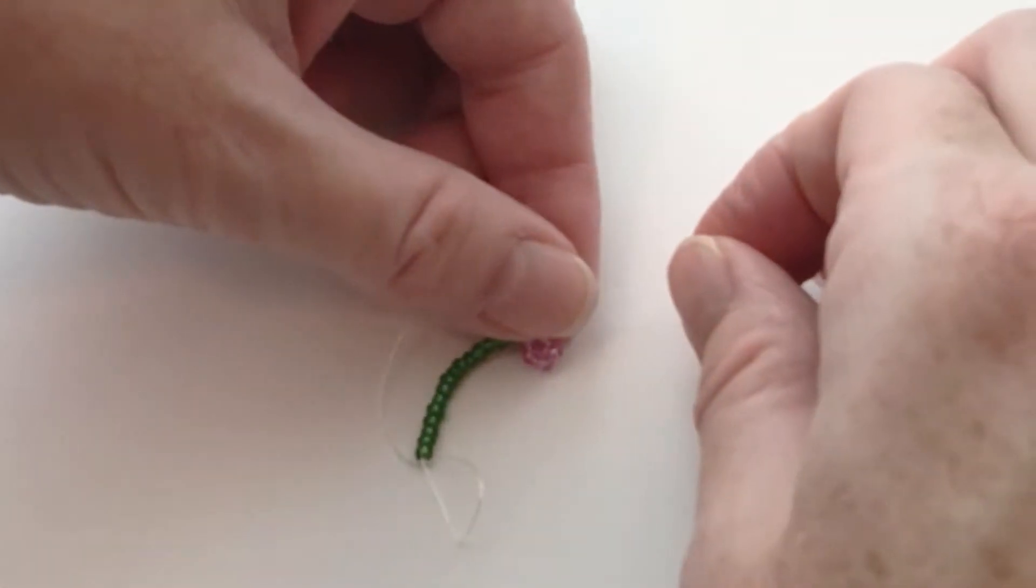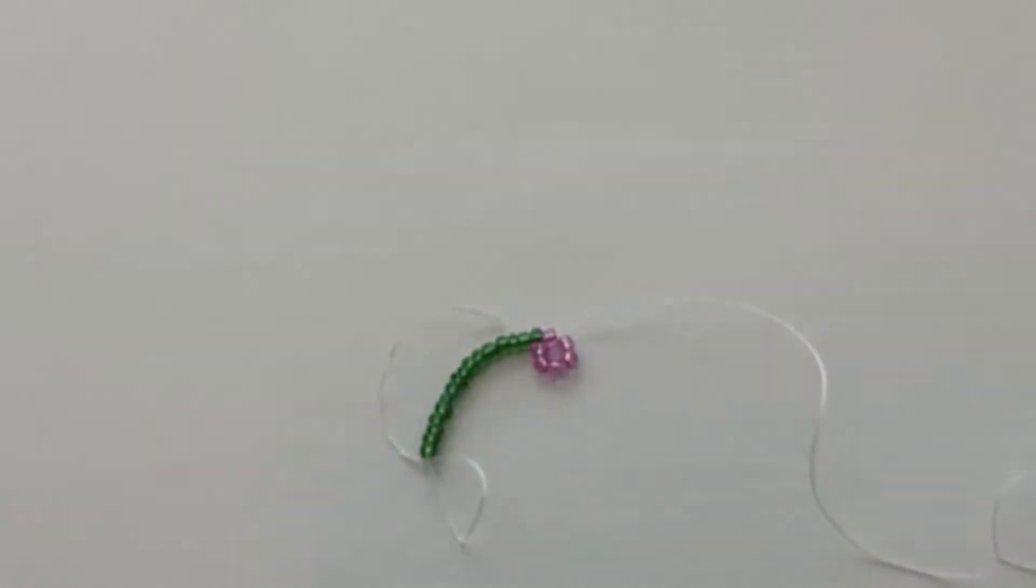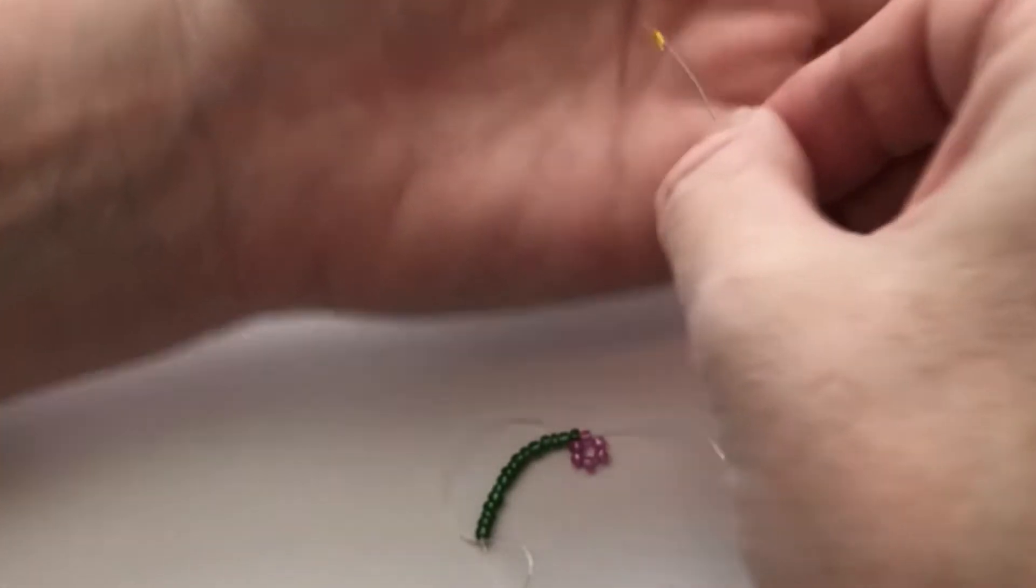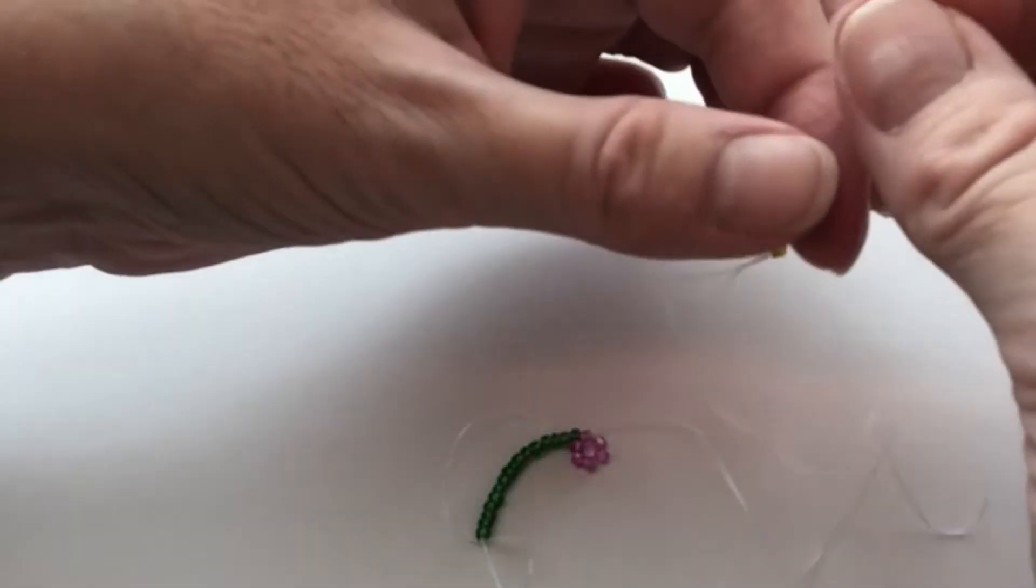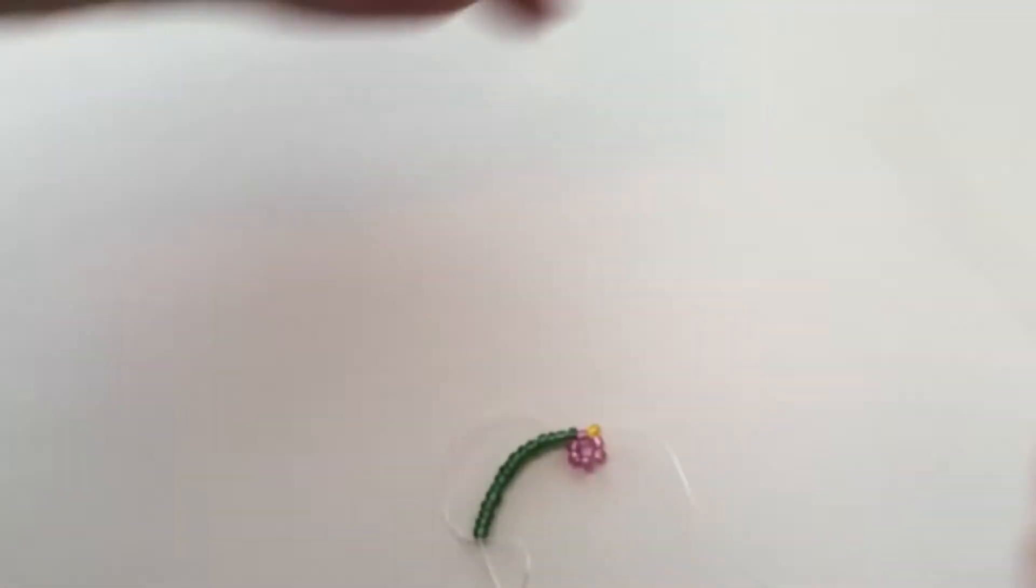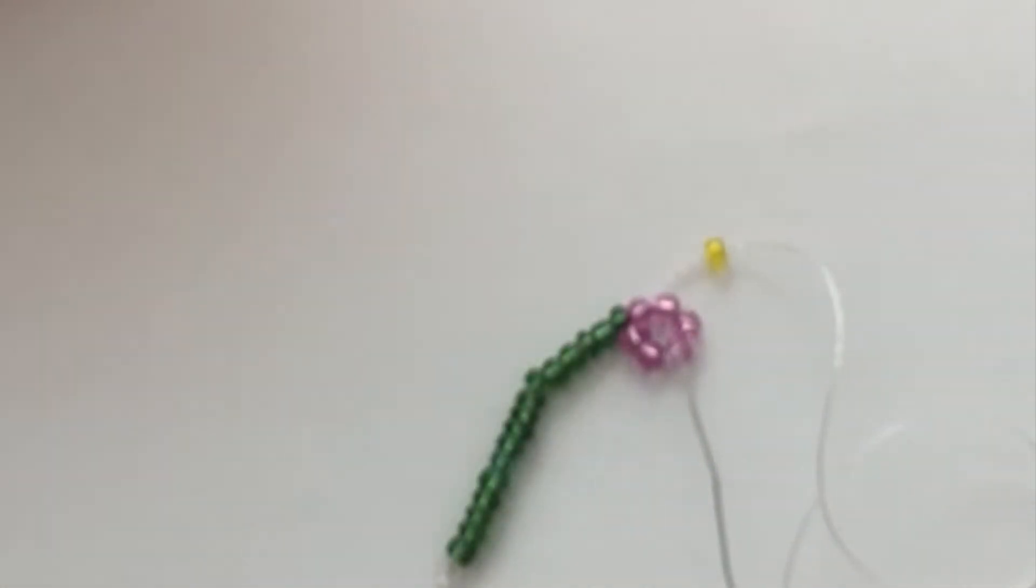Pull that snug against the band. To make the center of the flower, thread on a single seed bead. The yellow seed bead is going to end up in the middle, and the way the string is coming out here—